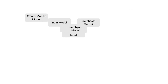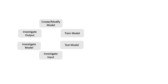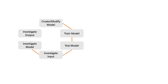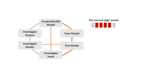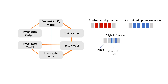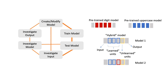During the study, participants could move through different stages of model building as they required, and build models using representations from related tasks. For instance, a user might create a hybrid model by transferring learned representations from a model trained on uppercase characters and empty computational units. Users could build and iterate over as many models as they preferred. We used state diagrams to capture the interaction patterns of each user as they moved through these steps.